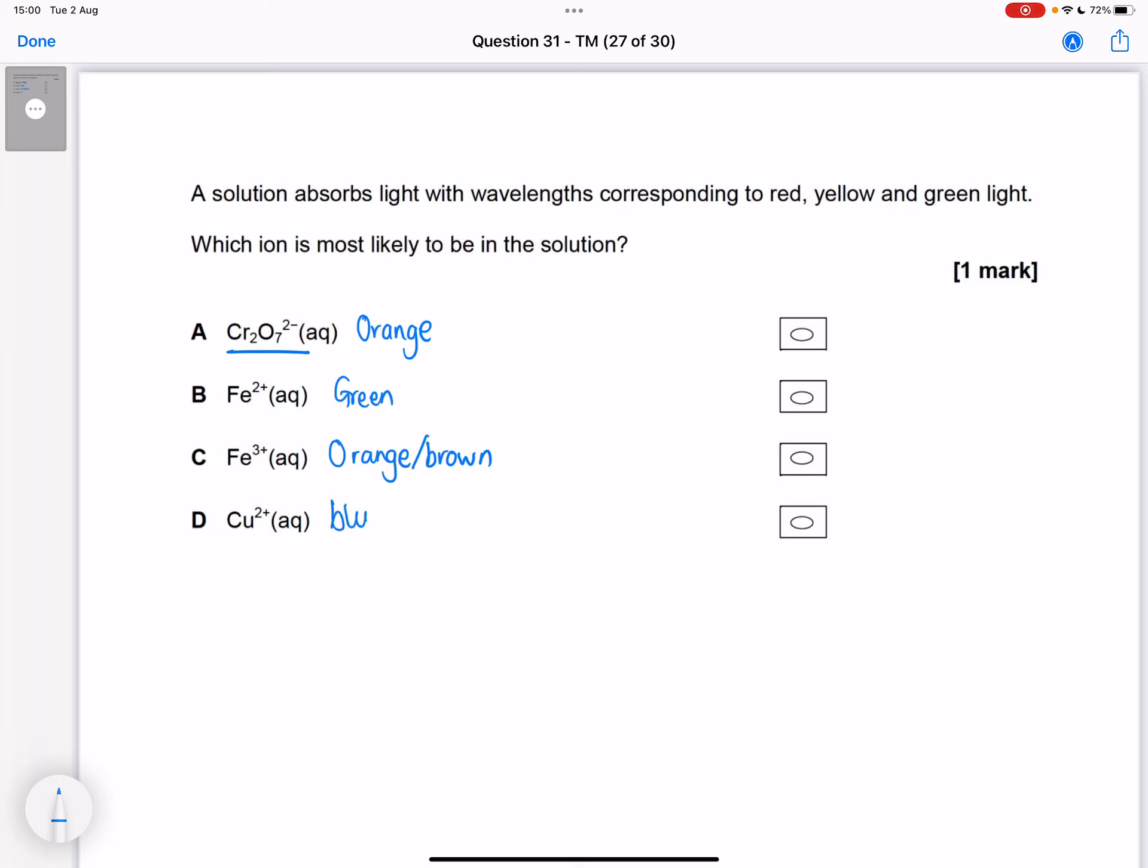And copper two is blue. So orange is a mixture of red and yellow, so this would not absorb red and yellow light because it would be transmitting red and yellow light. Green can't absorb the green light - it's transmitting the green light.